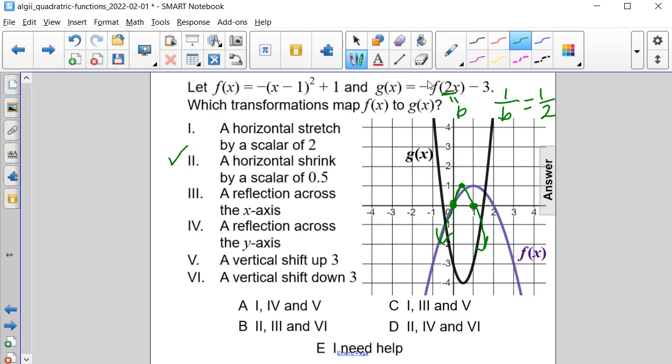Now, we have this negative that's out in front here. That represents a reflection. And because it's outside of f(x), it's a reflection across the x-axis, which makes sense. So it keeps the x-intercepts the same. But now it's going to look like this in the middle.